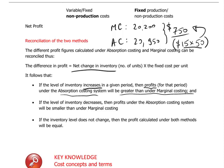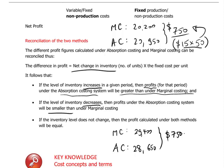The opposite effect happens when inventory decreases — we would expect absorption costing profits to be smaller than marginal costing profits. In our year two scenario, the marginal costing profit was $29,400 and the absorption costing profit was $28,650 — a difference of $750 again. That's because inventory went from 50 units to zero, and those 50 units contained fixed costs of $15 per unit from year one, now being released through the profit and loss account.